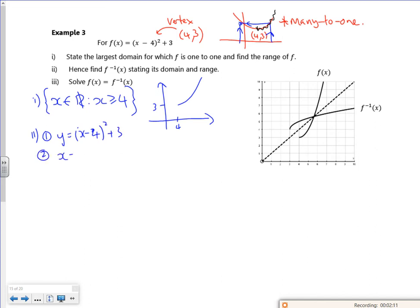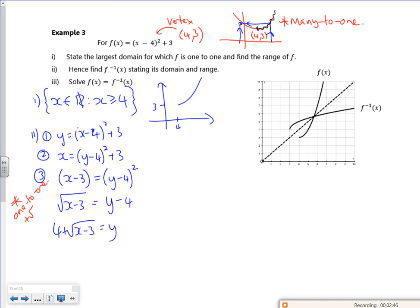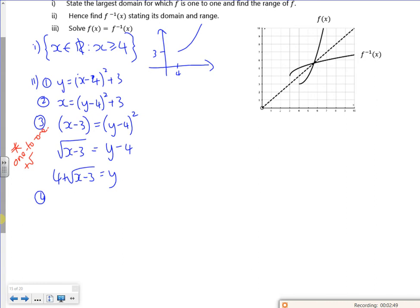Second step, change x and y over. Third step, rearrange it. Remember you're keeping it one-to-one so it's just a plus. So keep it as a plus square root and then I've got 4 plus the square root of x minus 3 is y. Then the last little bit, I was using f of x, so my inverse is 4 plus the square root of x minus 3.